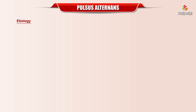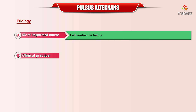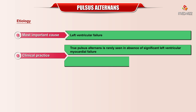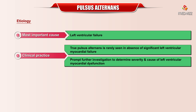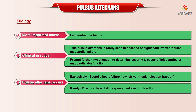The most important cause of pulsus alternans is left ventricular failure. In clinical practice, true pulsus alternans is rarely seen in the absence of significant left ventricular myocardial failure and should prompt further investigation to determine the severity and cause of left ventricular myocardial dysfunction. Although pulsus alternans almost exclusively occurs in systolic heart failure, it can occur rarely in diastolic heart failure too.